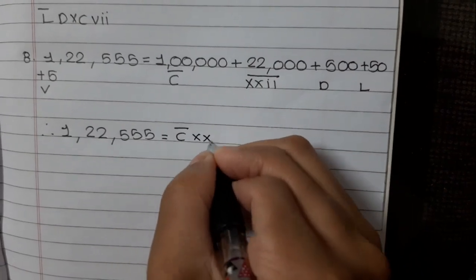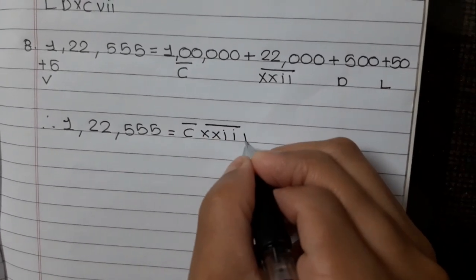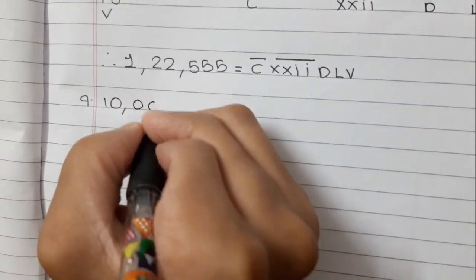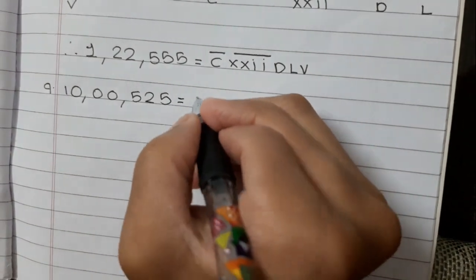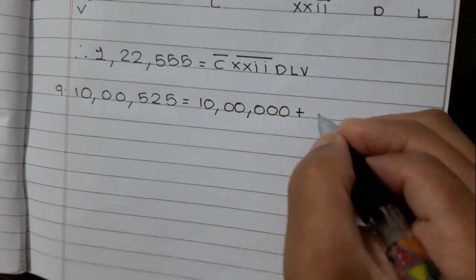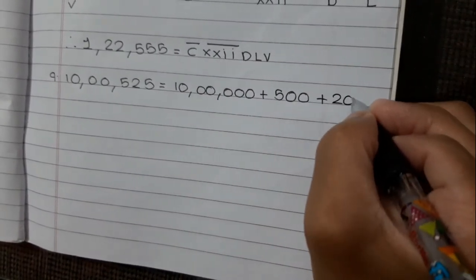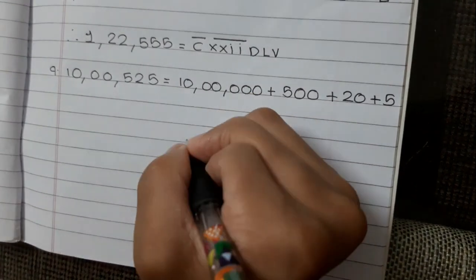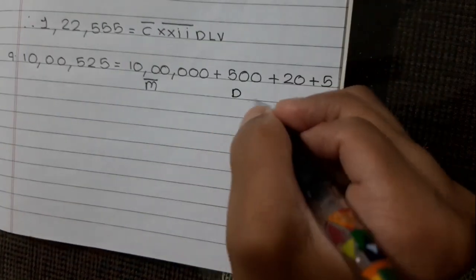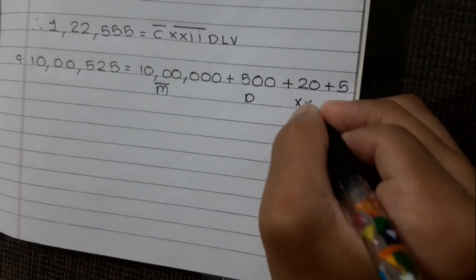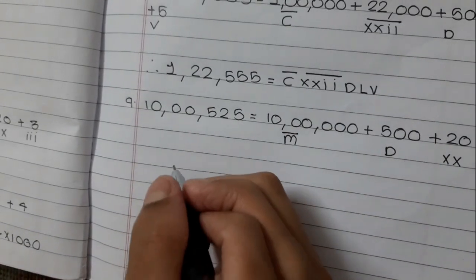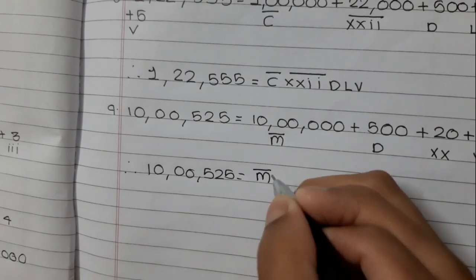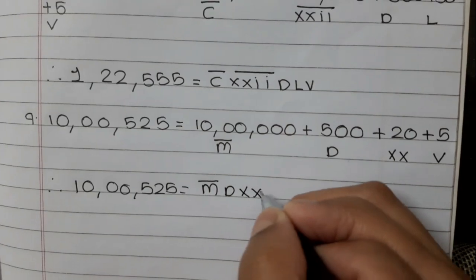Our last example is 10,00,525 equals 10,00,000 plus 500 plus 20 plus 5. 1000 times 1000 is 10,00,000, which is M bar. 500 is D. 20 is double X. 5 is V. Now we will join it together. Therefore, 10,00,525 equals M bar D XX V.